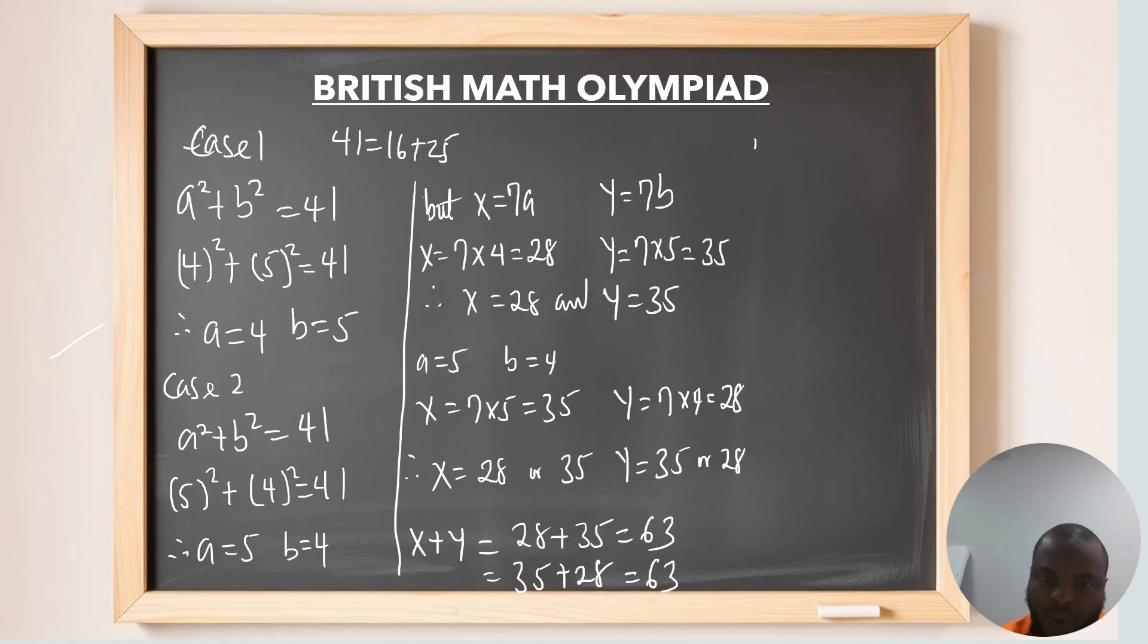And if you go back to the question, maybe, probably, you want to confirm. We have that x squared plus y squared equals to 2009. So, if you plug in the value of x, which is 28 squared plus 35 squared, you can confirm that this is equivalent to 2009. So, this is the end of the proof.